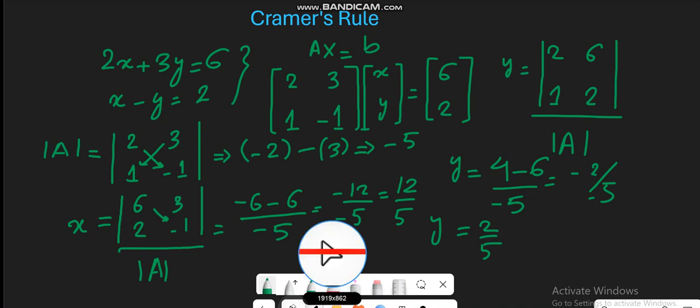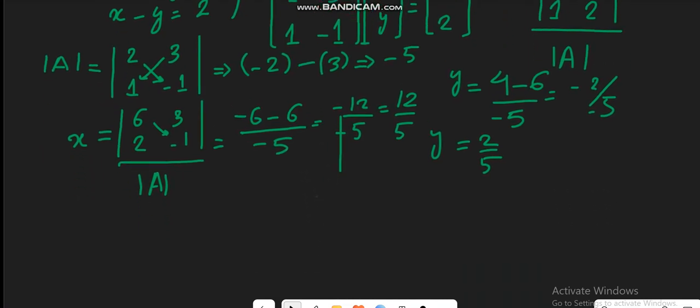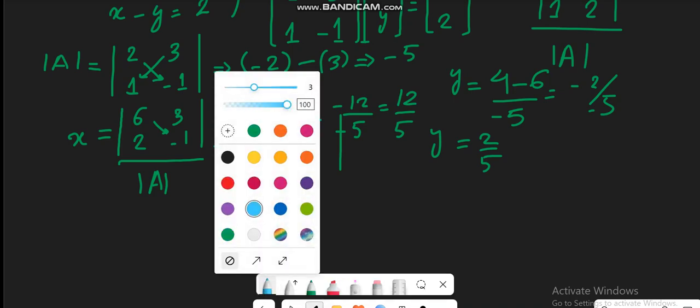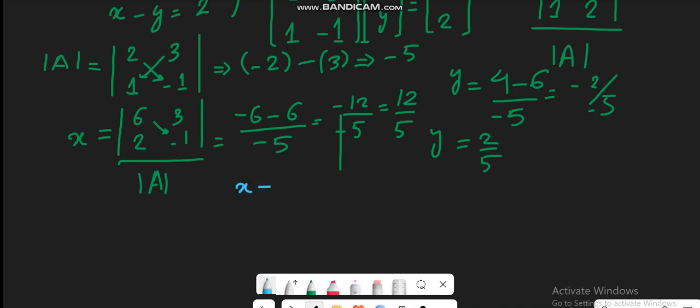Let's see whether we have found the correct answer or not. So we will substitute the determined values in any of these equations. Let's assume that I choose the equation x minus y is equal to 2. The value of x that we have determined is 12 over 5, and the value of y is 2 over 5, and the answer should be equal to the right-hand side, which is equal to 2.